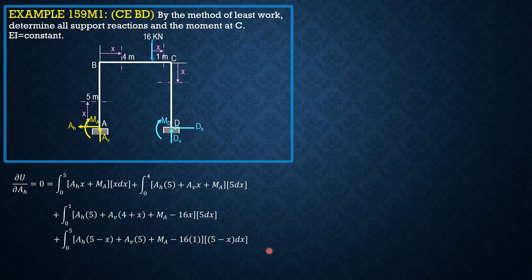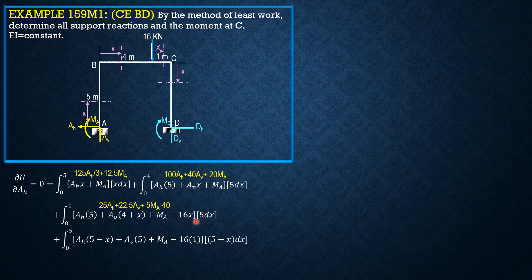Evaluating the integrals: the first gives (125/3)Ah + 12.5Ma; the second gives 100Ah + 40Av + 20Ma; the third gives 25Ah + 22.5Av + 5Ma − 40; and the last integral is also evaluated.